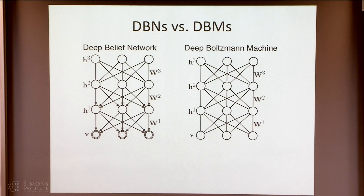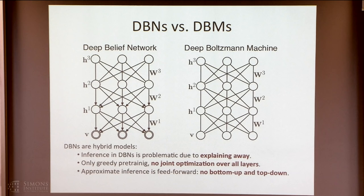If I compare both models and look at their overall structure: a deep belief network has this interesting structure which is an undirected graph followed by a sigmoid belief network. In a Boltzmann machine, you can think of the entire system as being an undirected graphical model — a Markov random field with layers of hidden variables. Deep belief networks are hybrid models, and doing proper inference in these models is actually pretty expensive.